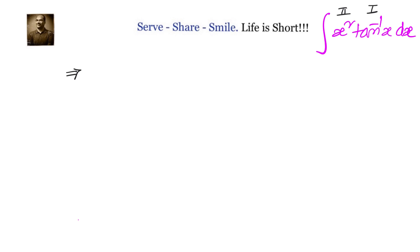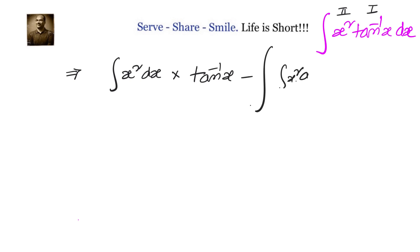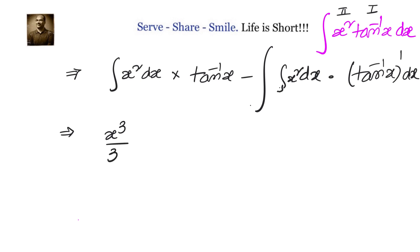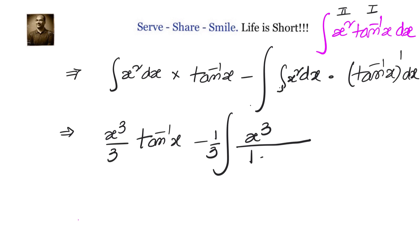When we apply integration by parts, our first step will be: integral of the second function, that is integral of x squared dx, multiplied by the first function, that is tan inverse x, minus the integral of whatever we have for the second function multiplied by the derivative of the first function, which is the derivative of tan inverse x. After simplification, this equals x cubed by 3 times tan inverse x minus the integral of x cubed by 3 times 1 over 1 plus x squared dx.